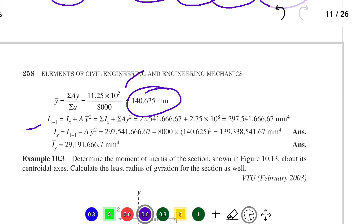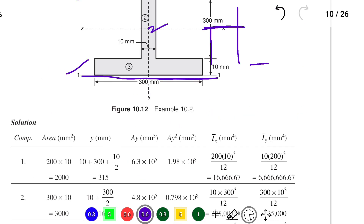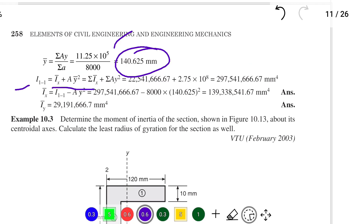Now we find I₁₁, the moment of inertia about the reference axis: I₁₁ = ΣIx + ΣAY² = 297,541,666.67 mm⁴. Then the centroidal moment of inertia Ix-bar = I₁₁ − A×Y-bar² = 139,338,541.67 mm⁴.